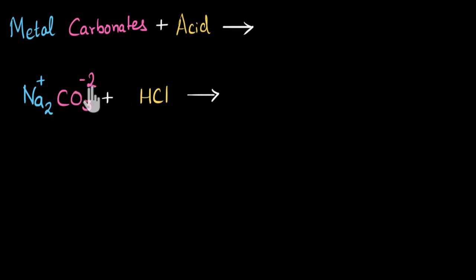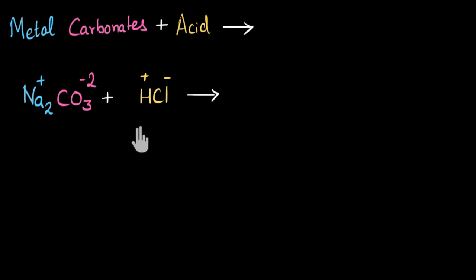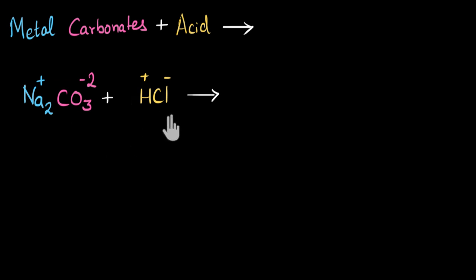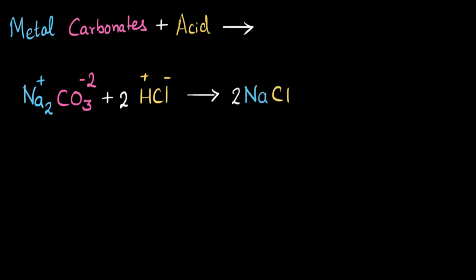Similarly, from HCl I will get H⁺ ion and chlorine minus ion. The ions are going to exchange position in a double displacement reaction. Sodium, which was earlier attracted to the negative ion of carbonate, will now get attracted towards chlorine and form NaCl — sodium chloride as one of the products. And hydrogen will get attracted to carbonate ions, and we will get H₂CO₃ as another product.